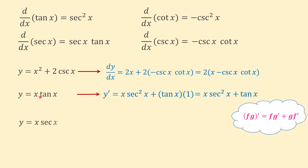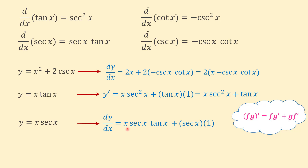Another example: y equals x times secant of x. Again we use the product rule — the first function is x and the second is secant of x. The derivative equals x times the derivative of secant of x, which is secant of x times tangent of x, plus secant of x times the derivative of x, which is 1. If we factor secant of x from both terms, we can rewrite the answer as secant of x times open parenthesis x tangent of x plus 1 close parenthesis.